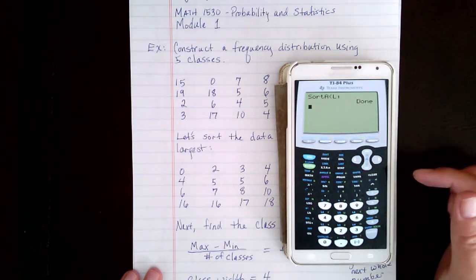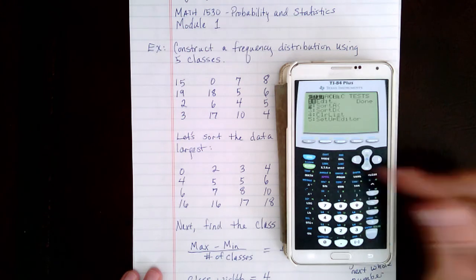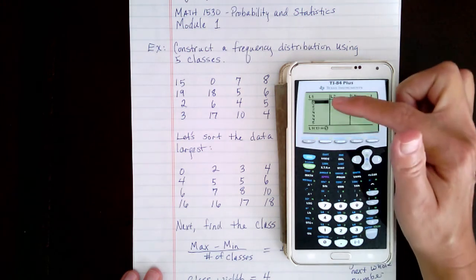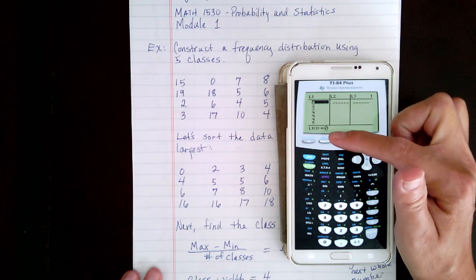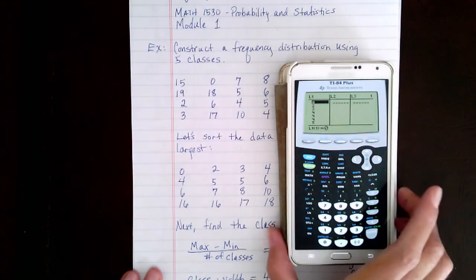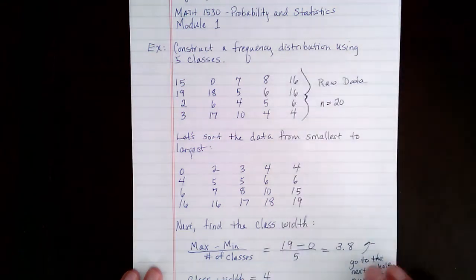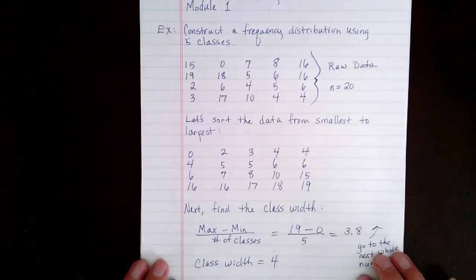When you go back to the Edit screen, so hit STAT, leave it on Edit, and see how all of this data is sorted from smallest to largest. Now I've already done this to save time, and here is the data sorted from smallest to largest.